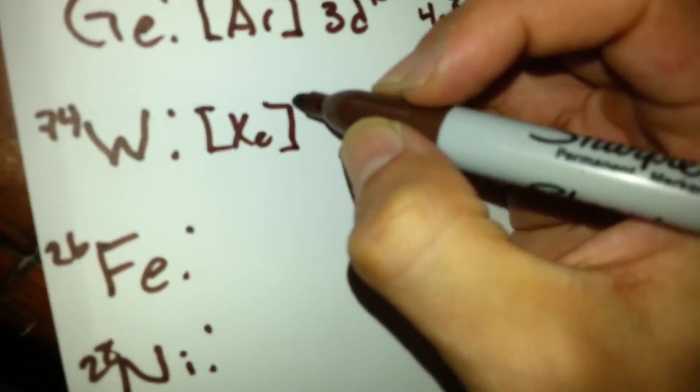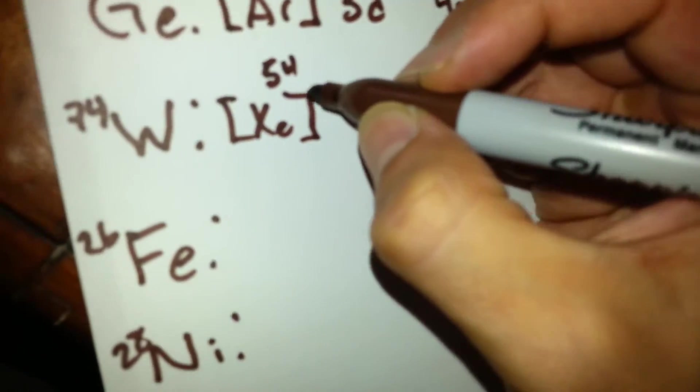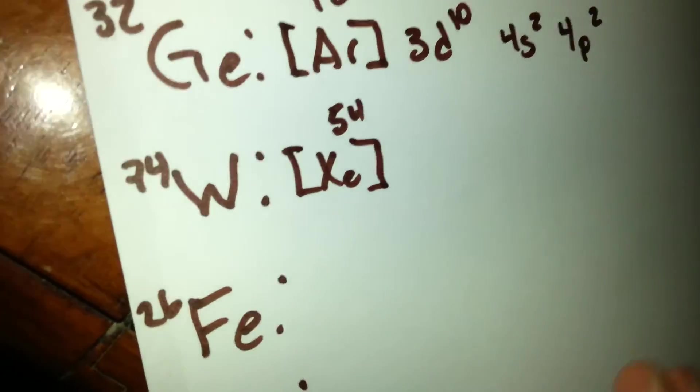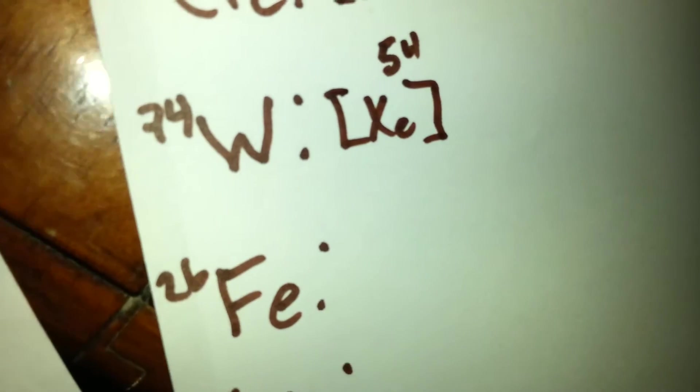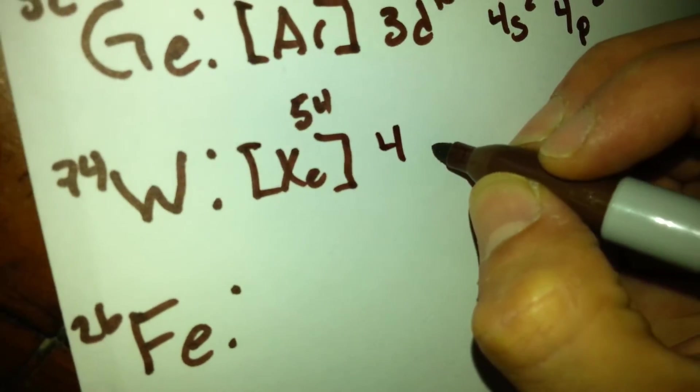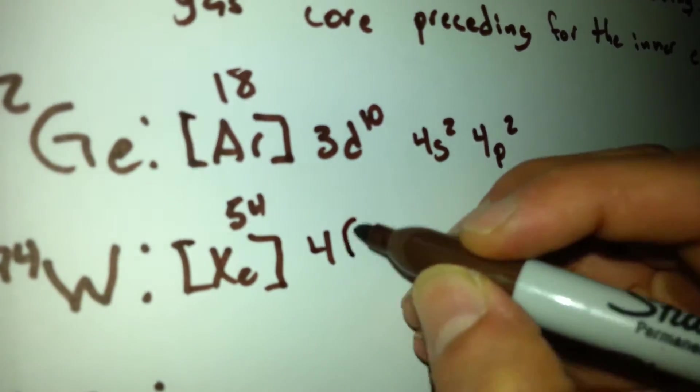After xenon, we will have to go and fill out the following orbitals. We start with 4. We begin with the 4f orbital, full with 14.